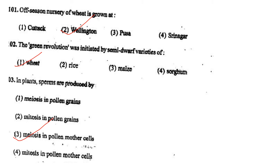Next one: The green revolution was initiated by semi-dwarf varieties of option 1, wheat; option 2, rice; option 3, maize; option 4, sorghum. Answer is option 1: wheat.